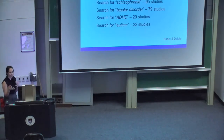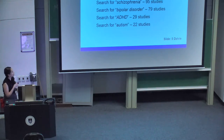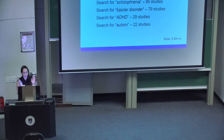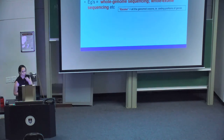Looking at how GWAS is evolving, depression and schizophrenia are leading the pack in the genome-wide association catalogue with almost 100 studies. Bipolar disorder is a strong follower, with ADHD and autism bringing up the rear. PTSD has a recently published study — the largest GWAS of PTSD to date — which should be findable in the GWAS catalog.